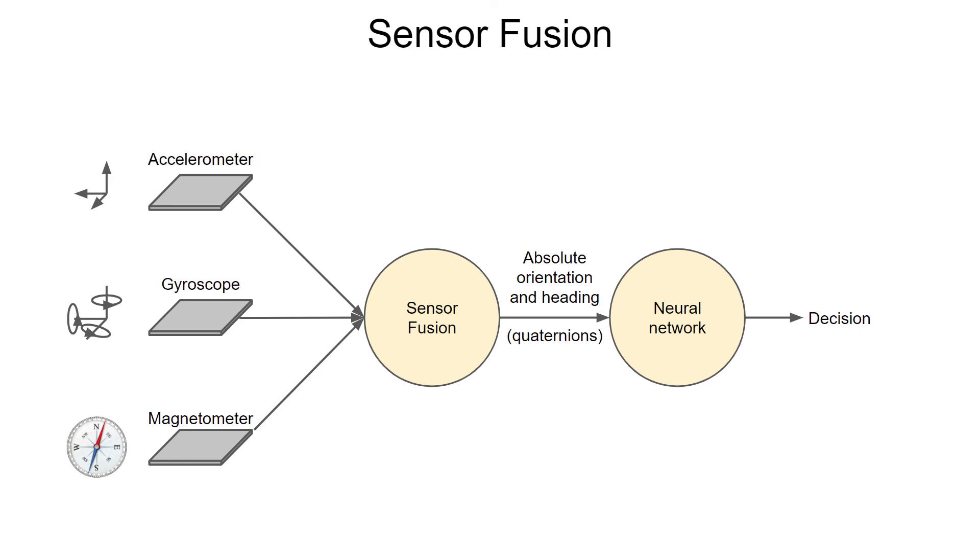So much like we used root mean square or mel frequency cepstral coefficients as inputs to our machine learning model, you'll probably need to do something similar with sensor fusion. In this example, you might need to calculate the quaternions from the sensors first before feeding them to the model. Then the neural network can be used to make a decision or classification about what to do with that absolute orientation. This hopefully gives you some ideas about how you can use machine learning in combination with sensors on your embedded system.